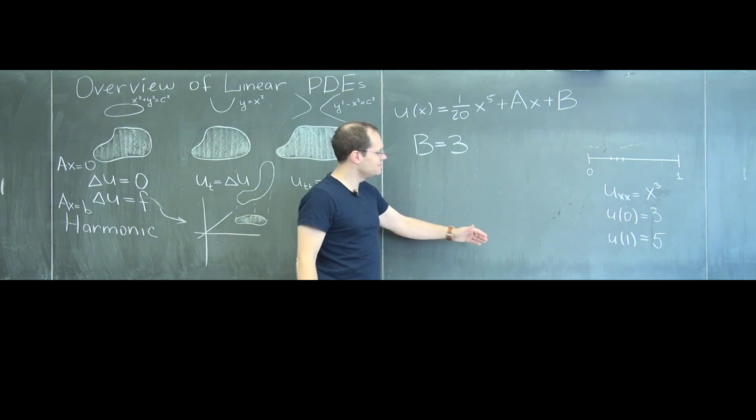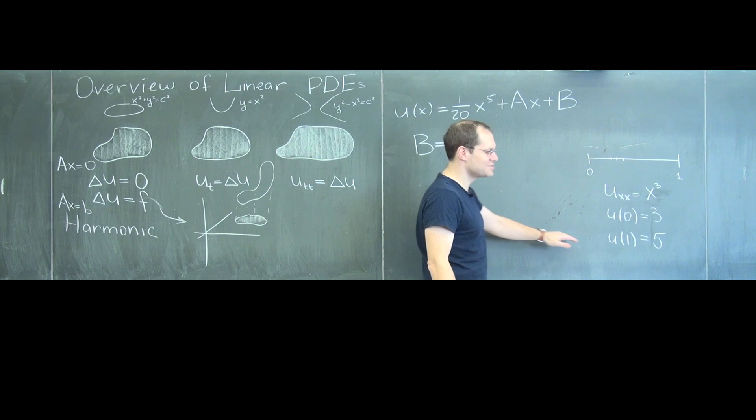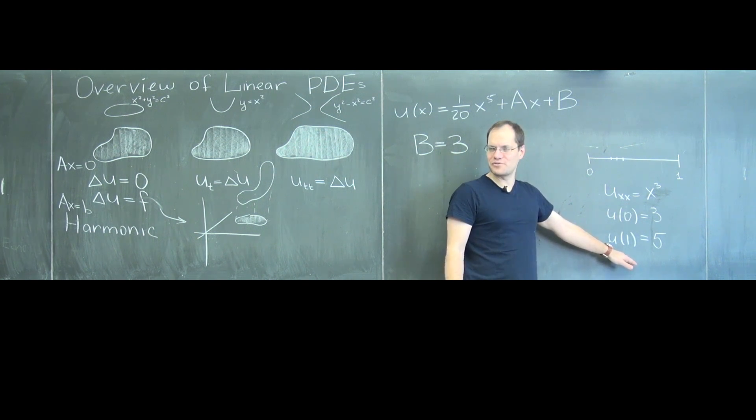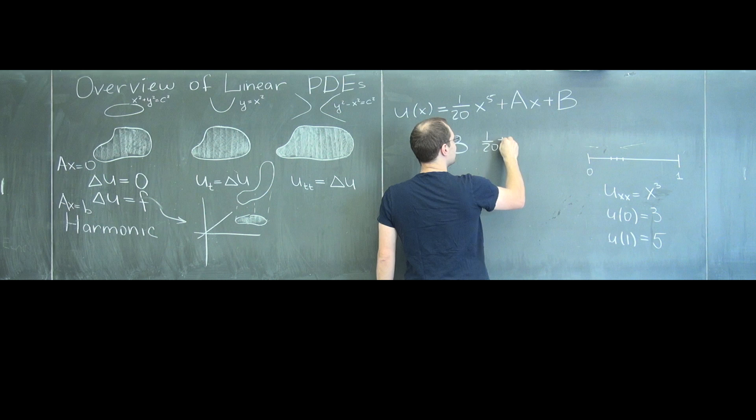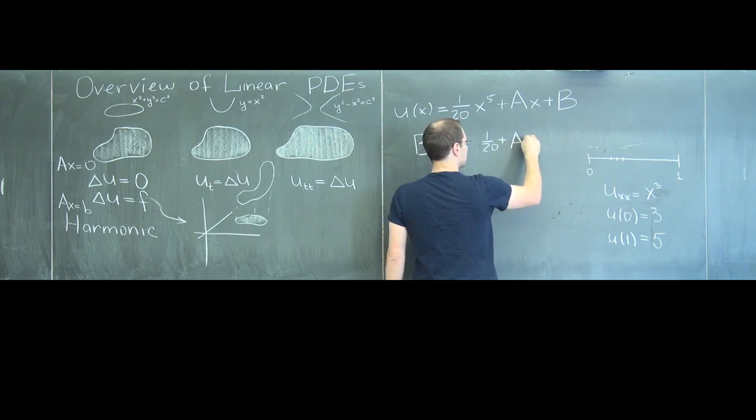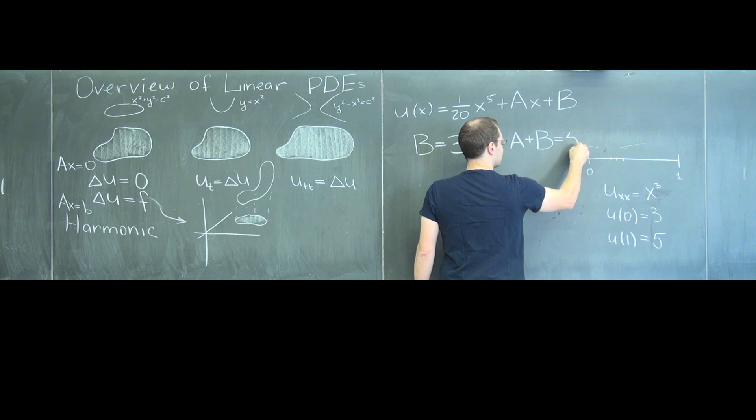At five, am I going to, at one, thank God, I don't have to raise five to fifth power. At one, the value of the function needs to be five. So we have one-twentieth, plus a, plus b, equals five.